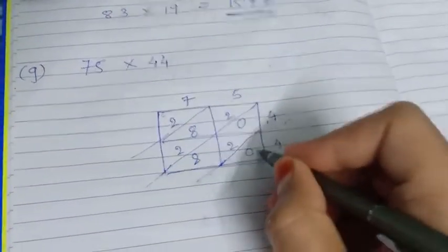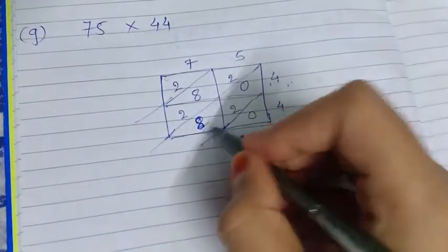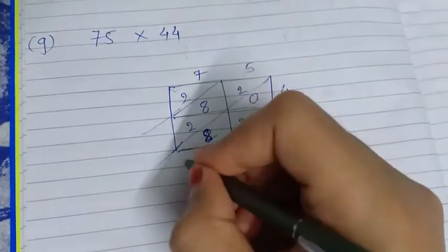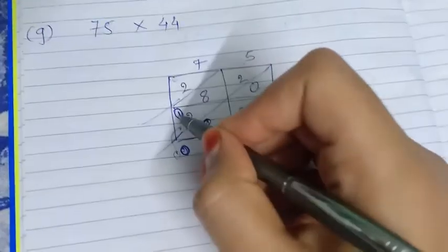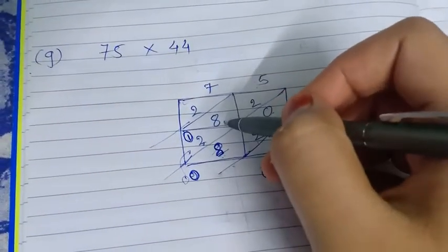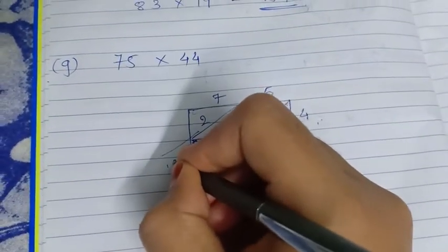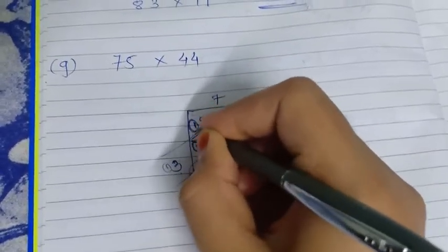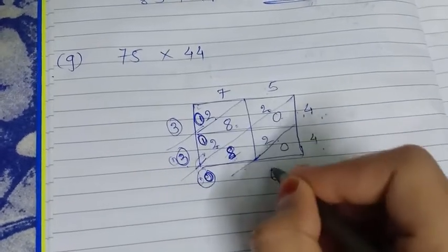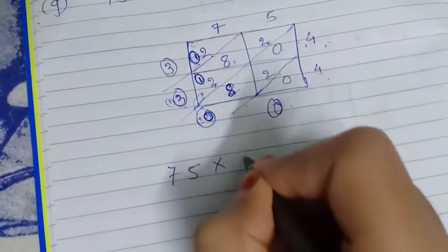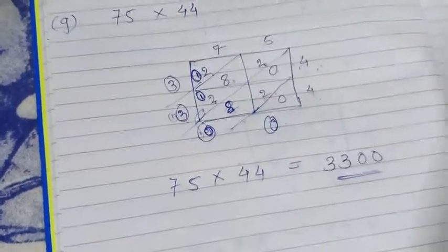Now do the diagonal addition: 0 as it is; 8 + 2 + 0 = 10 — write 0 and carry 1; 1 + 2 + 3 + 8 + 2 = 13 — actually: 2 + 1 = 3; 3 + 8 = 11; 11 + 2 = 13 — write 3 and carry 1; 1 + 2 = 3; and 3 as it is. So the answer is: 75 × 44 = 3300.